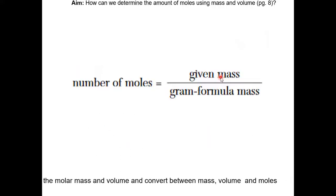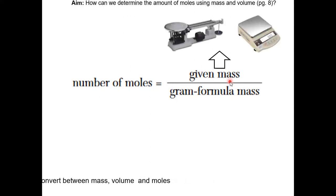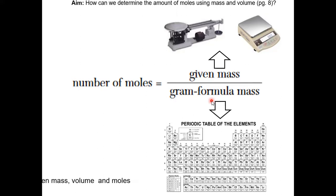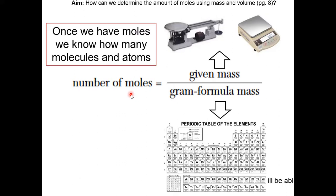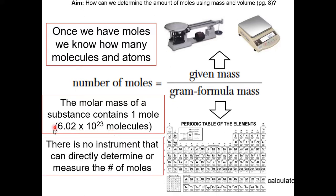To review how to count the number of atoms and molecules in a substance: first measure the mass using a balance, then figure out the grand formula mass using the periodic table, and through this equation you can get the number of moles. If we know the number of moles, we know how many molecules and atoms are present. The molar mass contains 1 mole, which is 6.02 × 10²³ molecules. There is no instrument that can directly measure the number of moles — we calculate it indirectly.